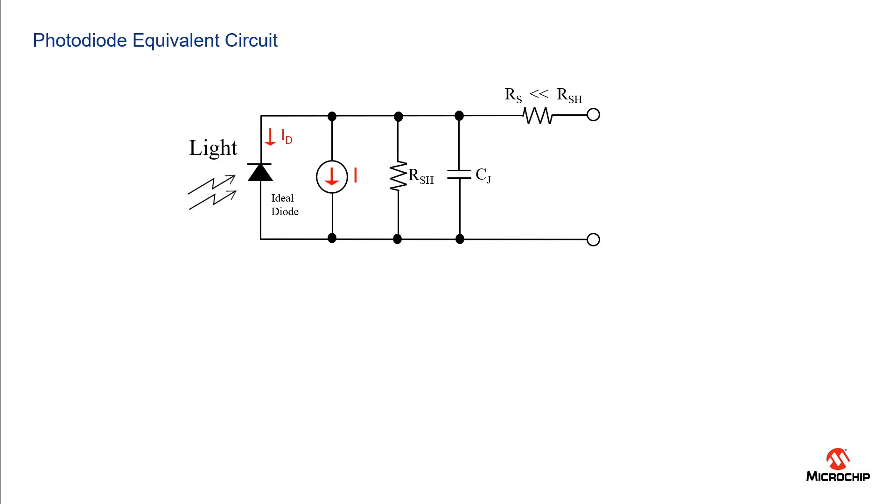An equivalent circuit can be represented by a current source, a junction shunt resistance, a junction capacitance, a series resistance, in addition to the normal p-n junction represented by the diode symbol.